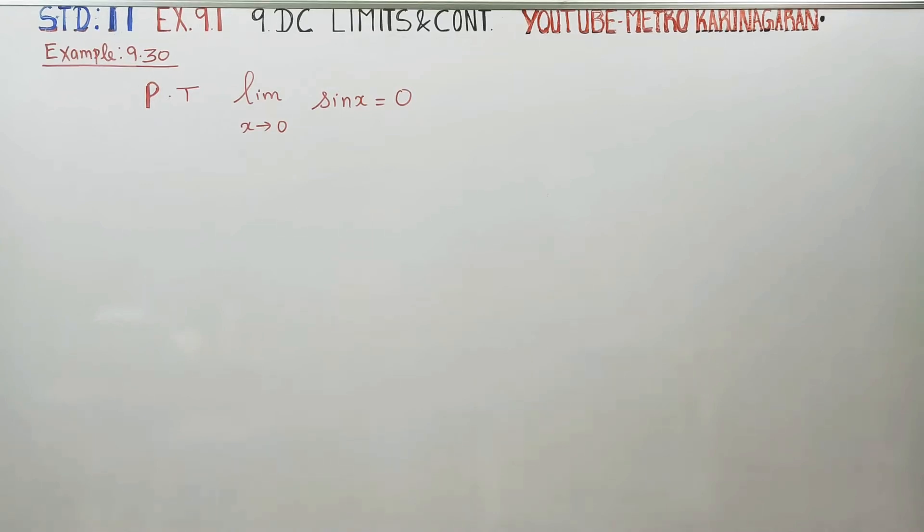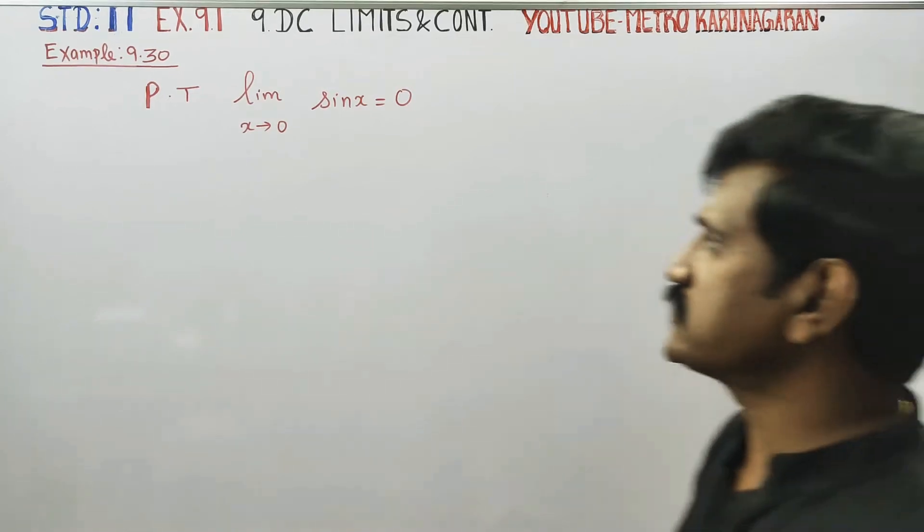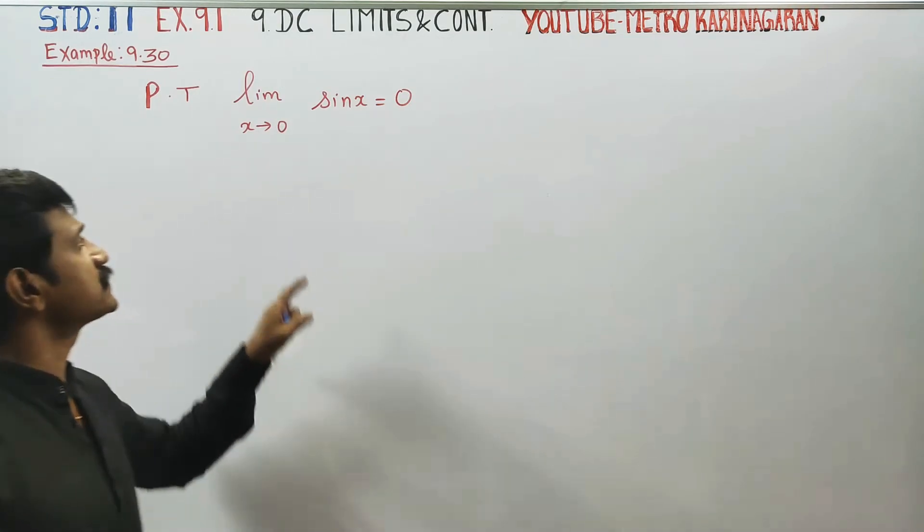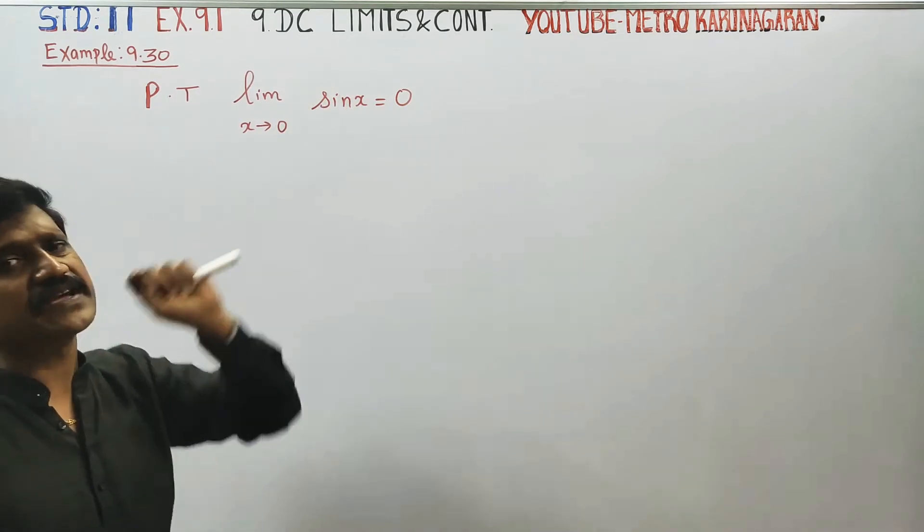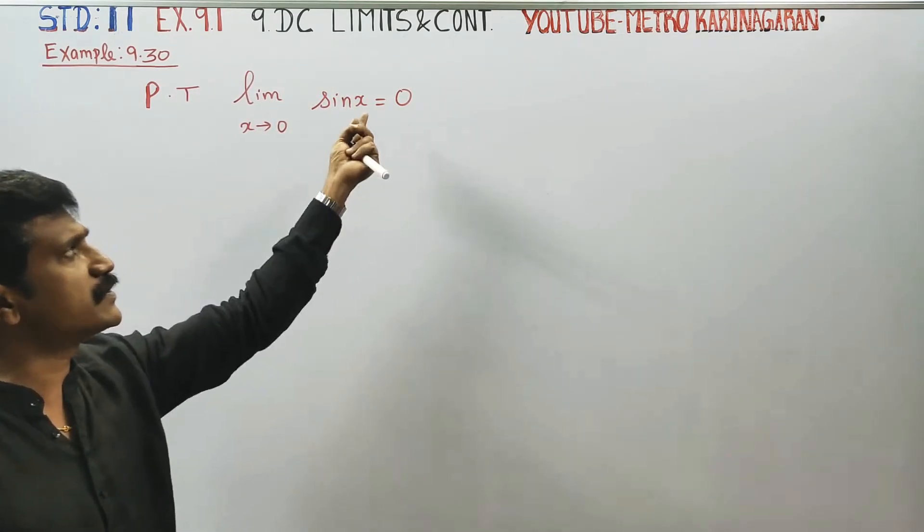Hello 11th standard students. I am Etro Karanagaran. In example 9.30, you have to prove that limit x→0 sin x equals 0. Here, if we put 0, sin 0 equals 0, so in one step we have the answer.